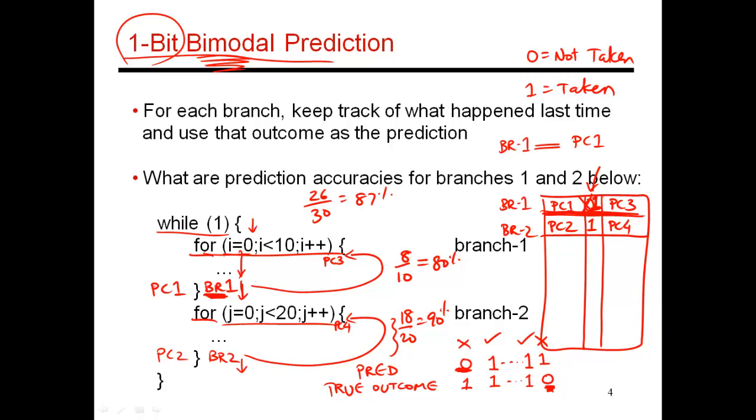So if I had not used the predictor, by default, I would have always assumed not taken. So my default earlier predictor, which always assumes that I'll go to PC plus 4, would have said 0 every single time. And that would have been correct only 1 out of the 10 times for an accuracy of 10%. So with the simple table over here, I have been able to make a much better prediction. And the accuracy is as high as 87%.